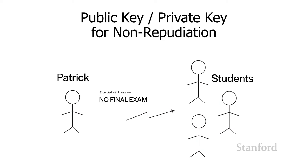Going back to the example of Maddie — if Maddie actually has access to my computer and my private key is sitting there on my computer with my whole email system set up to use the private key, she could totally send the message. So basically, this whole system is only as secure as your private key is secure.